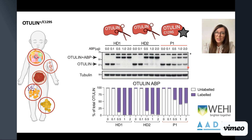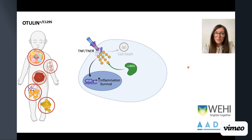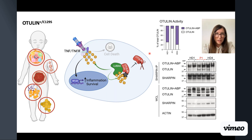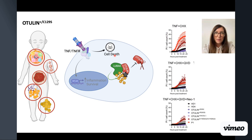So how does this inactive otulin actually drive disease? Along with ubiquitinating various other substrates, LUBAC also auto-ubiquitinates itself, and otulin is absolutely required to regulate this. We found that in patient cells, C129S otulin preferentially bound to LUBAC, outcompeting wild-type otulin and promoting the accumulation of ubiquitin on LUBAC. This inhibited LUBAC's ability to be recruited to the TNF receptor signaling complex and sensitized cells to TNF-induced cell death, leading to patient disease.